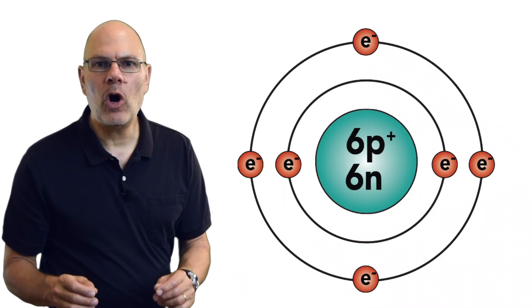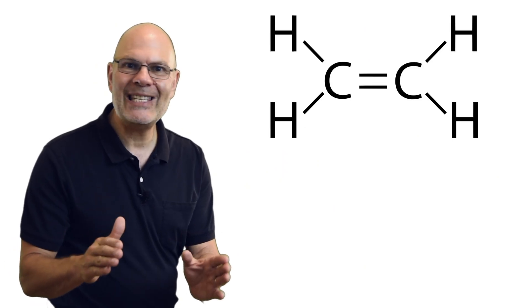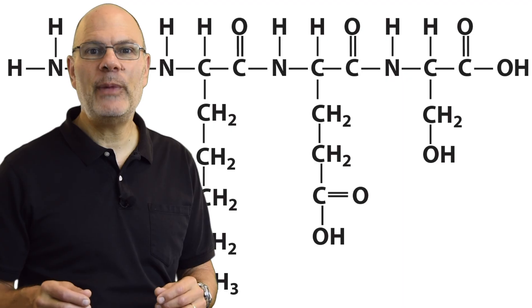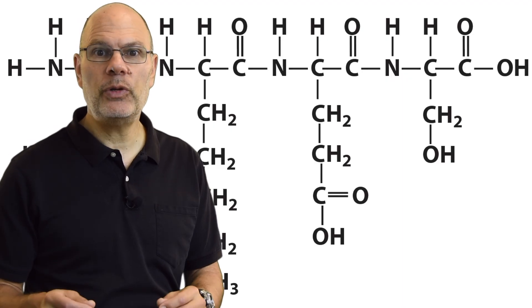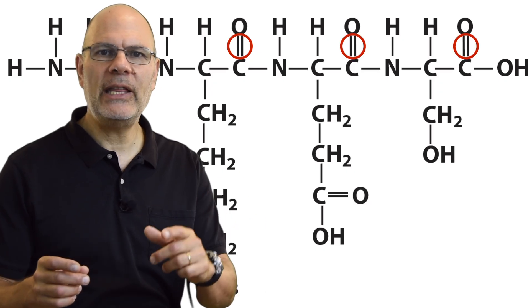Here's another thing about carbon. With four valence electrons, it easily forms double bonds and even triple bonds. This is a chain of amino acids, which are the building blocks of proteins. Notice the repeated double bond between the carbon and the oxygen.